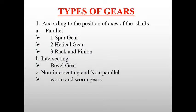Types of gears. The first classification is according to the position of the axis of the shaft. Based upon that, it is classified into three types: parallel, intersecting, and non-intersecting and non-parallel.